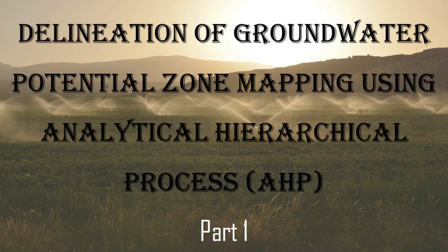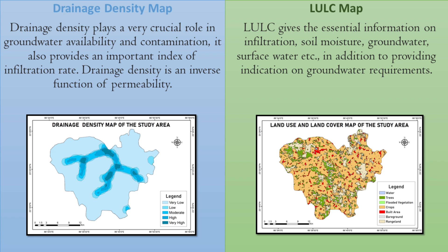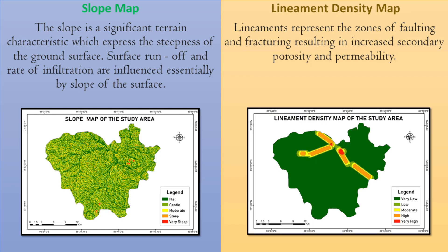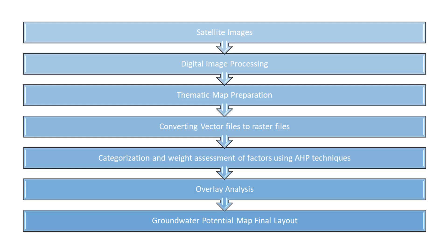Today's topic is on extraction of groundwater potential zone using AHP process. These are the factors which are used for the extraction of groundwater potential zone. According to my area, I have used only drainage density, land use land cover map, slope map and lineament density map, geomorphological map and geological map. This is the process we will follow to extract the groundwater potential of an area.